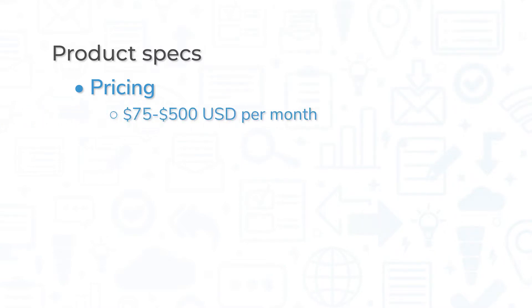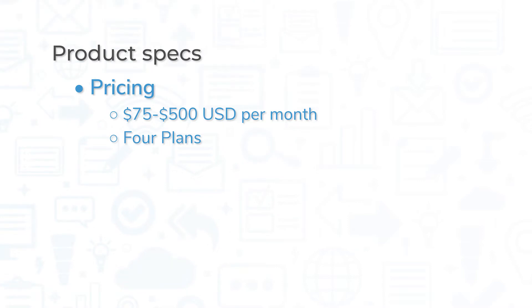ClickData is priced and paid per month, or users can opt to pay yearly for an extra discount. As of the time of this recording, pricing ranges between $75 to $500 USD per month, depending on what plan is chosen. Four plans are available: personal, team, business, and enterprise. As the plans rise in price, so do the quantity of features, including more storage space, more data refreshes, more users, and better support. Free trials are available if you'd like to try before you buy.